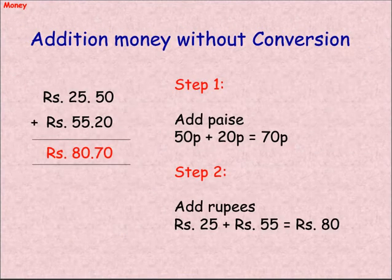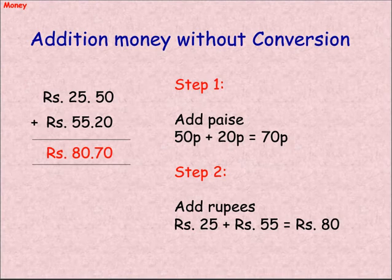Addition of money without conversion. Rupee 25.50 plus rupee 55.20 equals rupee 80.70. Step 1: Add paise — 50 paise plus 20 paise equals 70 paise. Step 2: Add rupees — 25 plus 55 equals rupee 80.